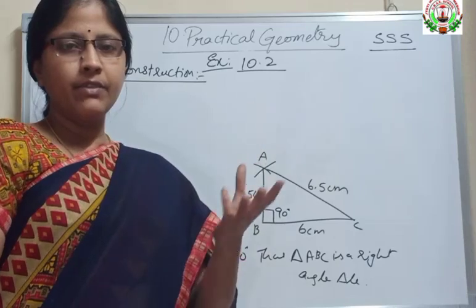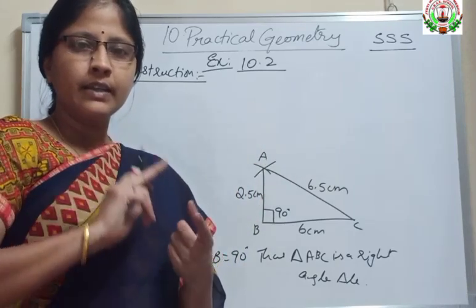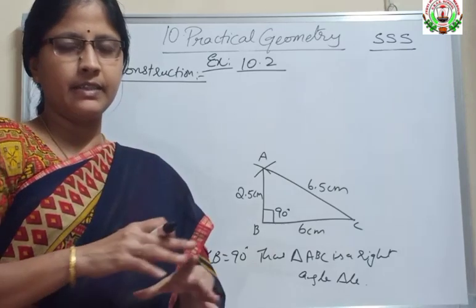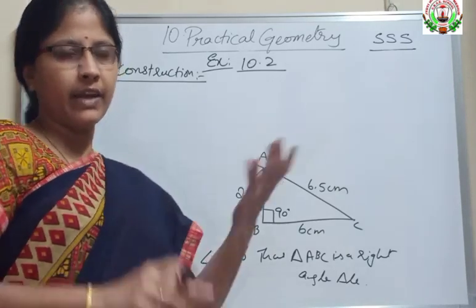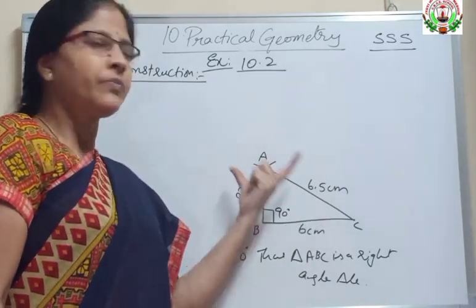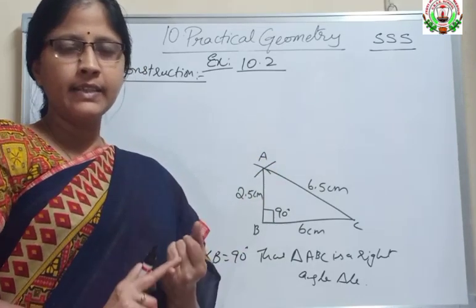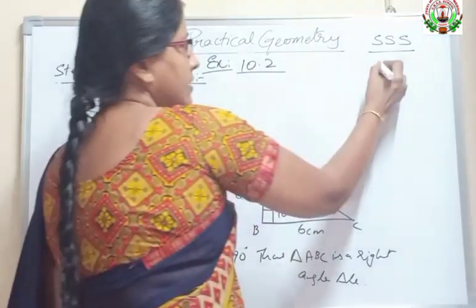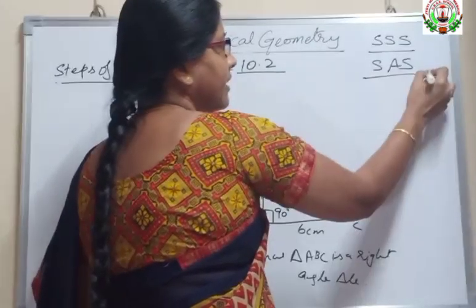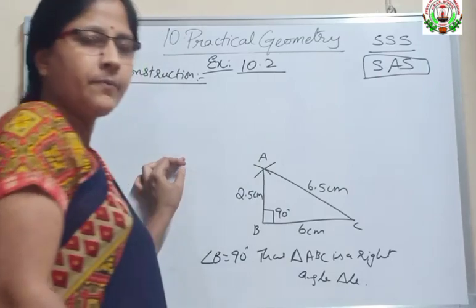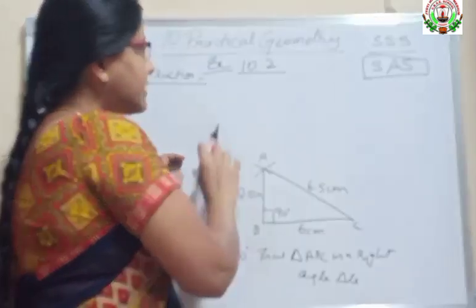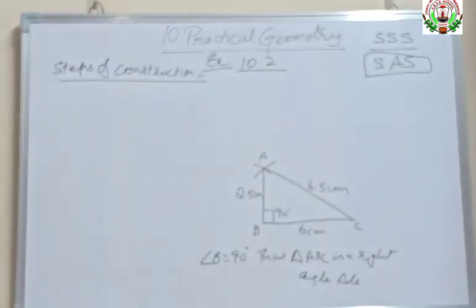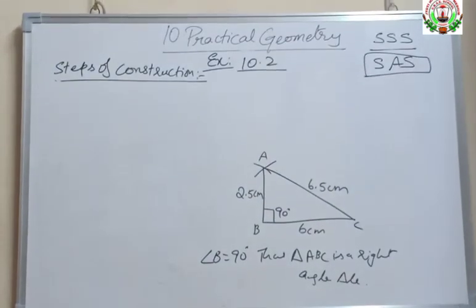In this exercise, we have constructed triangles using the given three sides. In the next exercise, two sides and one angle will be given — meaning we are going to use the side-angle-side criteria in our next exercise. So this is Exercise 10.2; let us continue in the next class.